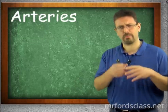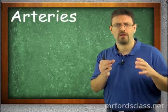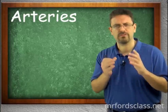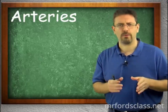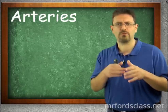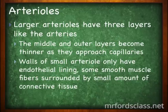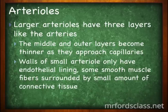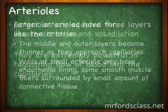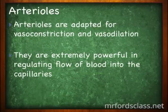Moving from arteries — the big muscular structures coming off the heart — we go to the smaller subdivisions, like going from a superhighway to a major town road. These are the arterioles. Large arterioles have three layers like the arteries, but the middle and outer layers become thinner as they approach the capillaries.